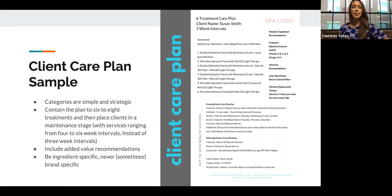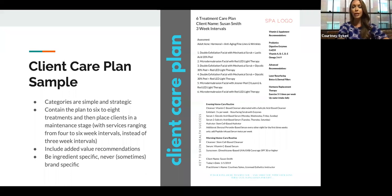Treatments three and four use glycolic 30 and glycolic 60 respectively, paired with red LED for healing — great alongside chemical peels. The fifth session is where you want to do the deepest treatment. If you're doing eight sessions, make your seventh the deepest. Always put a star by that session when taking notes.